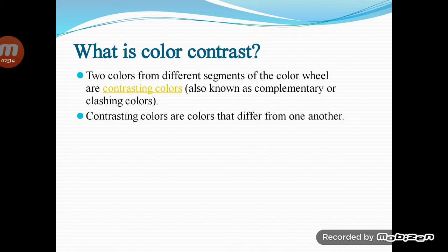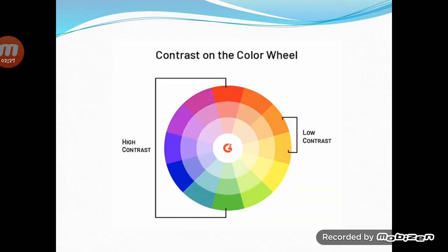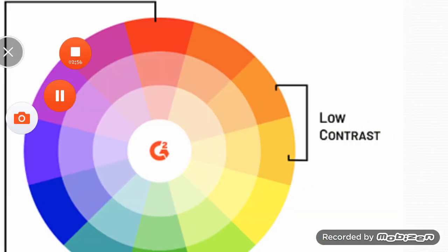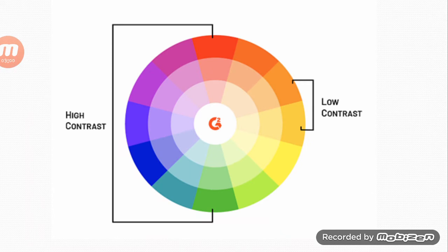What is color contrast? Two colors from different segments of the color wheel are contrasting colors, also known as complementary or clashing colors. Contrasting colors differ from one another; levels of contrast vary depending on their position on the color wheel. Colors directly opposite one another have the highest contrast, while colors next to one another have low contrast. For example, red-orange and orange have low contrast, while red and green have high contrast.